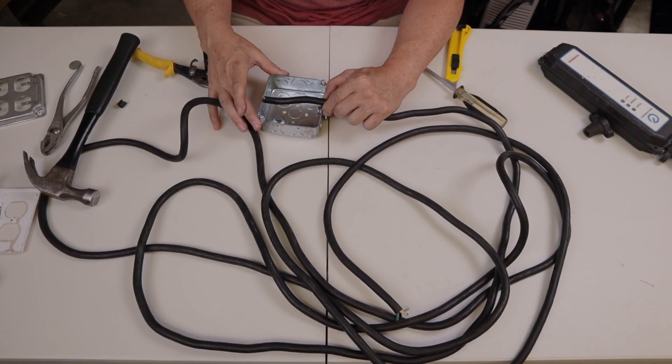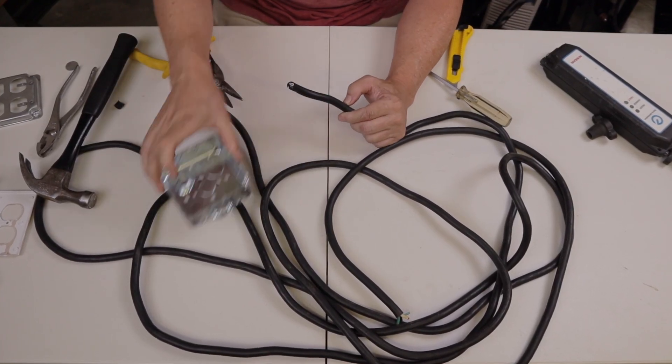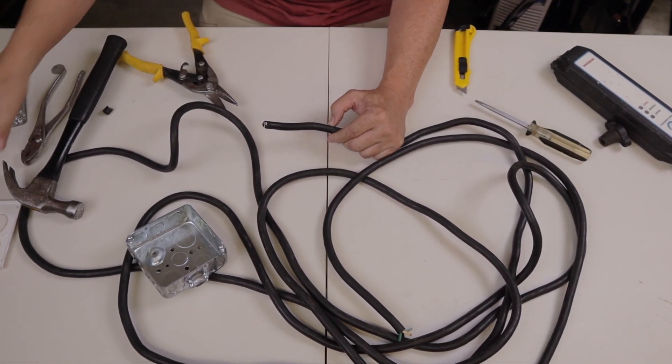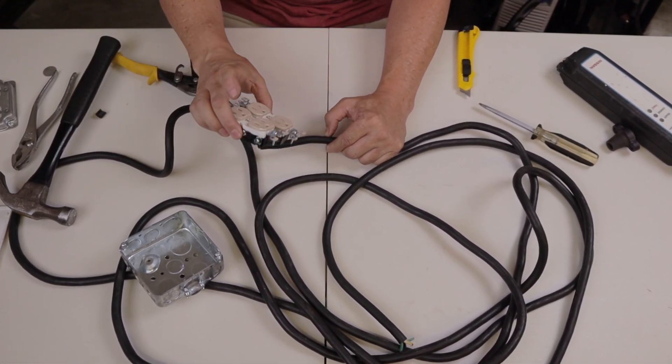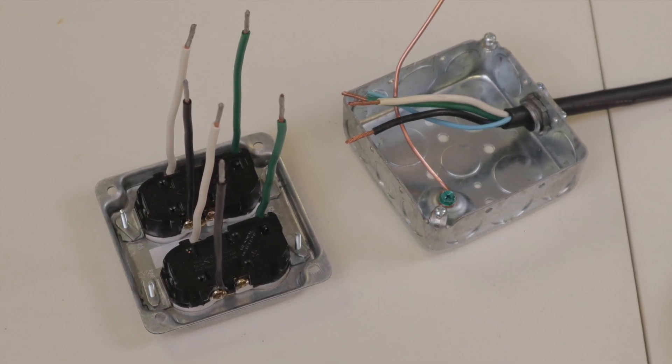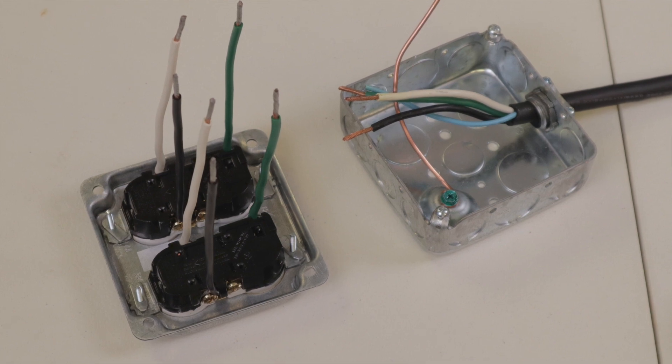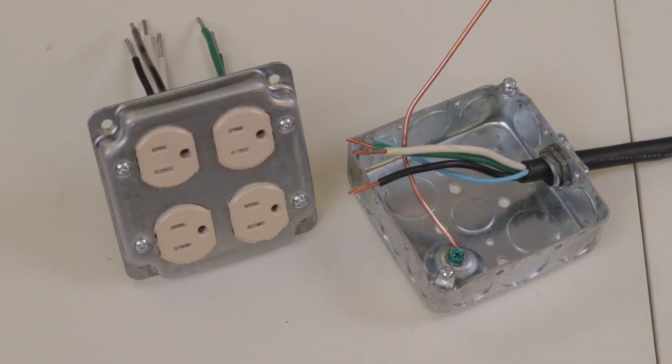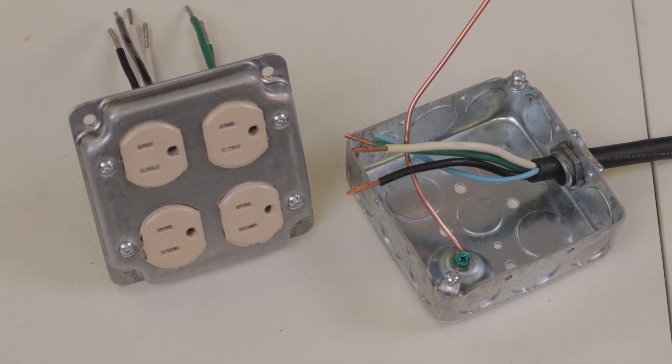Next, I just want to strip back enough of this insulation so I've got enough to enter the box. And I did do a full video in detail on how to wire a double duplex outlet. If you're curious to see how I did that, I'm just going to wire this up off camera. And then I'll show you the box once I get it done. If you're interested in seeing how I did that, I'll link that video in the description.